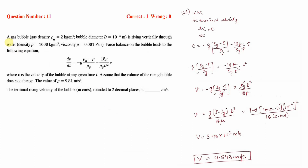This problem looks complicated but it's not. A gas bubble whose density and diameter are given is rising vertically. They have given a force balance where V is the velocity of the bubble at any time. We have to assume the volume of the rising bubble is not changing, and we need to calculate the terminal rising velocity of the bubble.